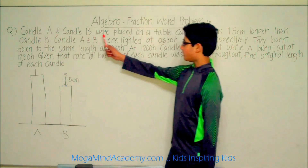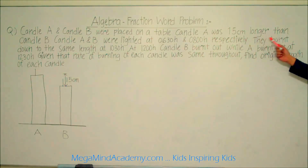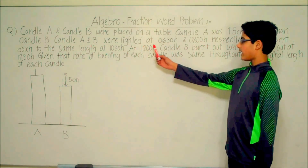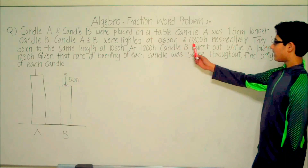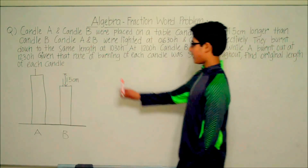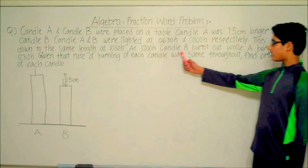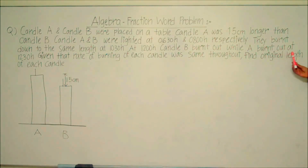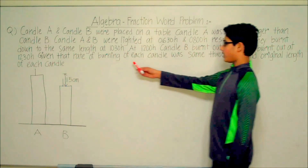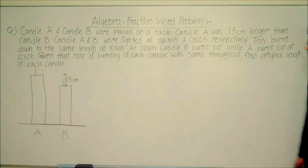Candle A and Candle B were placed on a table. Candle A was 1.5 cm longer than Candle B. Candle A and B were lighted at 6:30 a.m. and 8:00 a.m. respectively. They burnt down to the same length at 10:30 a.m. At 12 p.m. Candle B burnt out, while Candle A burnt out at 12:30 p.m. Given that the rate of burning of each candle was the same throughout, find the original length of each candle.